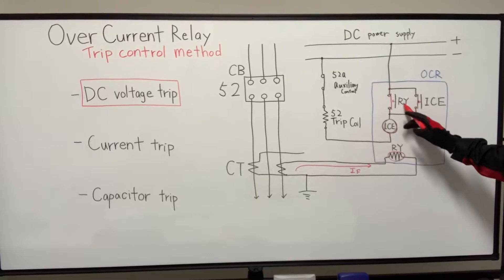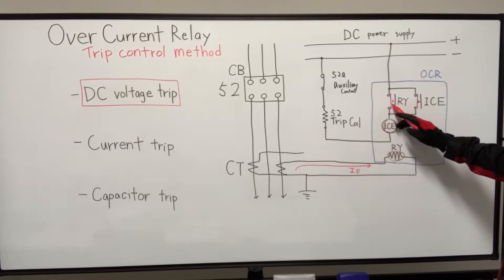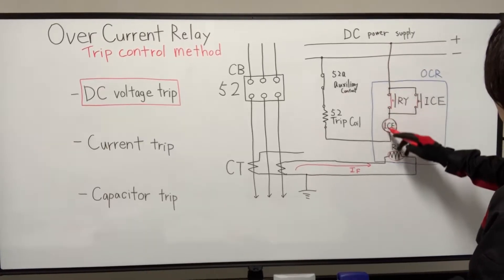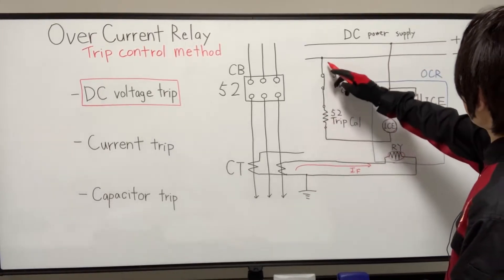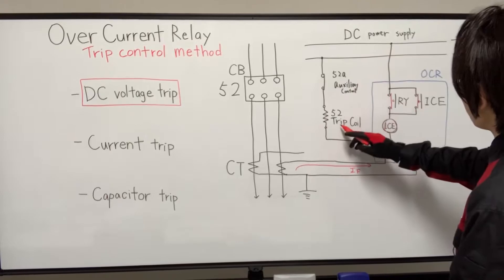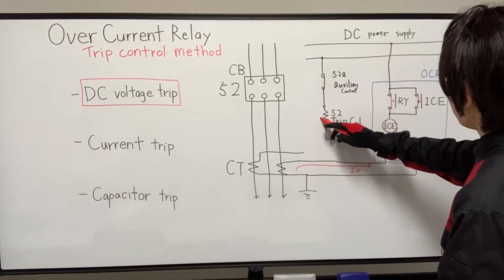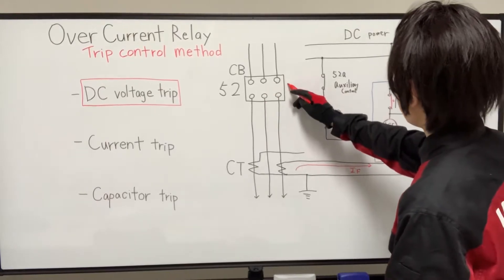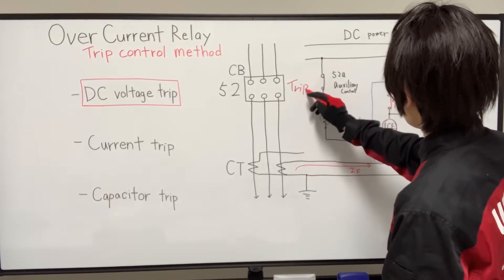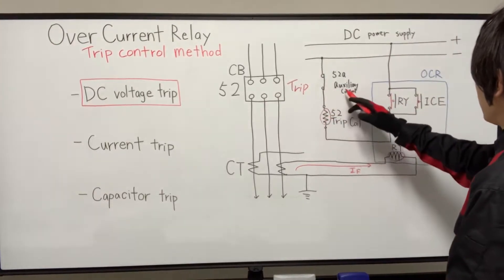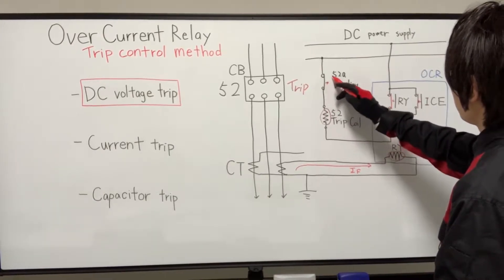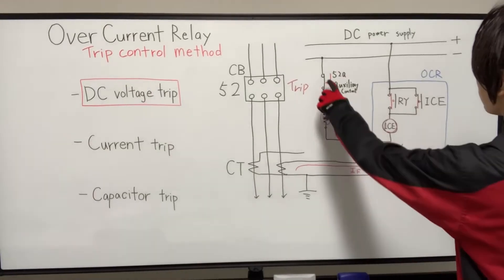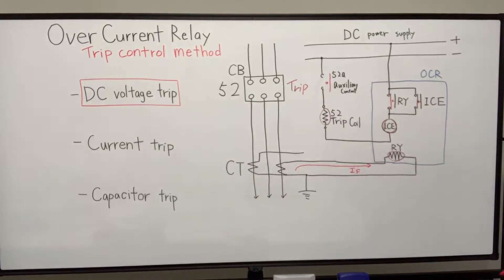And thanks to this relay's contact, he made this closed path. And trip coil is energized and circuit breaker will trip. Also, auxiliary contact is turned to open.